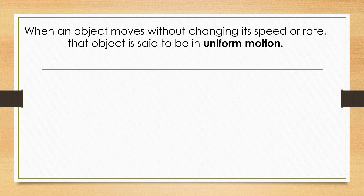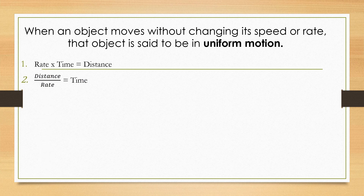When an object moves without changing its speed or rate, that object is said to be in uniform motion. The formula for distance is rate times time (d = rt). If you're looking for time, that's distance over rate; and if you're looking for rate, that is distance over time.